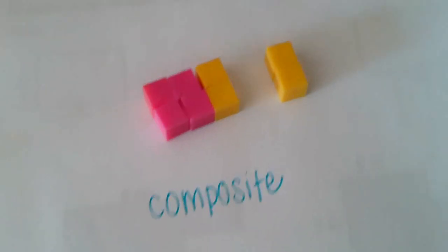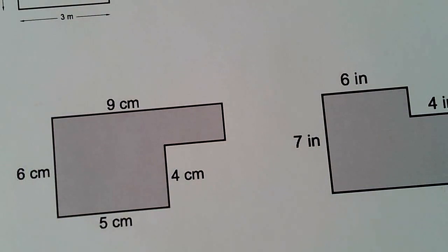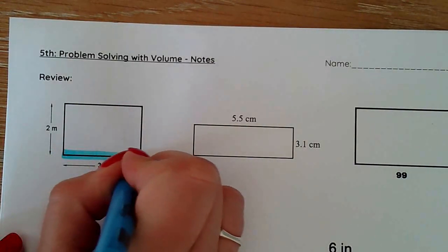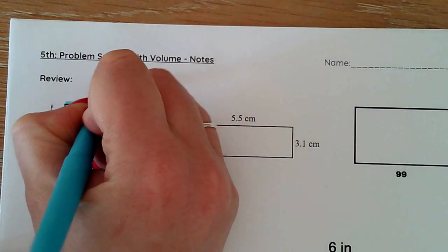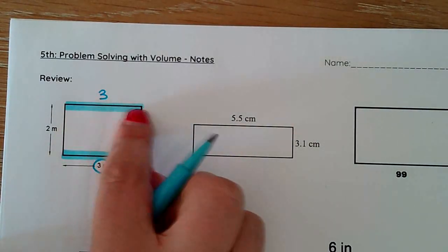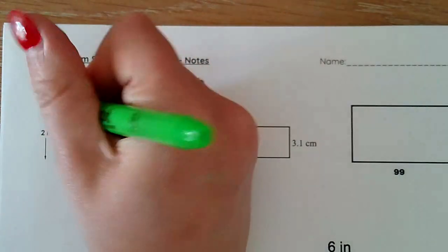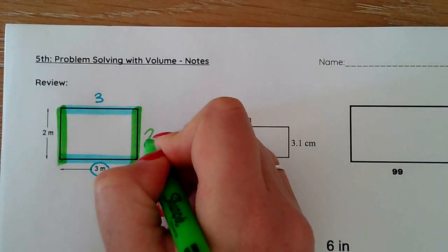Before we get into that today I want to go over a couple of review things and that is about rectangles. We know already that when I have a rectangle and I have side measurements for that rectangle, the opposite side of my rectangle will always have the same measurement. Because this is three, this will also be three. Because this is two, this also will be two.